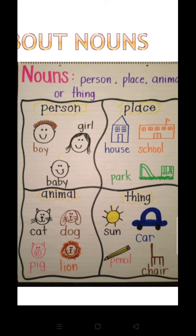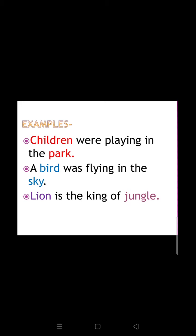Now kids, a question arises: you know what nouns are — names of a person, place, animal, or thing — but can you identify them in a sentence? Let me give you a few examples. 'Children were playing in the park' — children is a group of people and park is a place, so both are nouns. 'A bird was flying in the sky' — bird is an animal and sky is a place, both are nouns. 'Lion is the king of the jungle' — lion is an animal and jungle is a place where animals live. All these are nouns, written in the colored part.